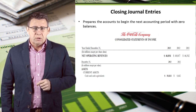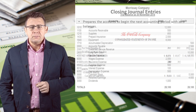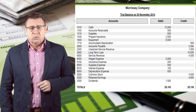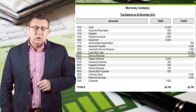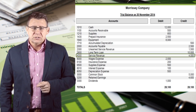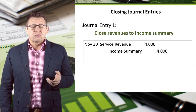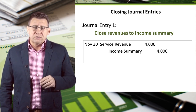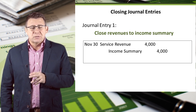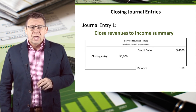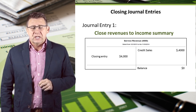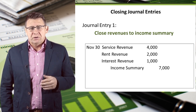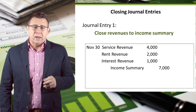Let's look at an adjusted trial balance and learn how to make the closing entries. Here is an example of an adjusted trial balance — we could have used financial statements to close the temporary accounts as well. Let's start with service revenue, which had a credit balance of $4,000. The first journal entry is to close revenues to income summary. Since revenues have a $4,000 credit balance, we will debit service revenue to make the balance zero, and income summary will be credited. After posting this entry, the balance in service revenue is zero. Note that if we had more than one revenue account, like rent revenue and interest revenue, we would include them in the journal entry.